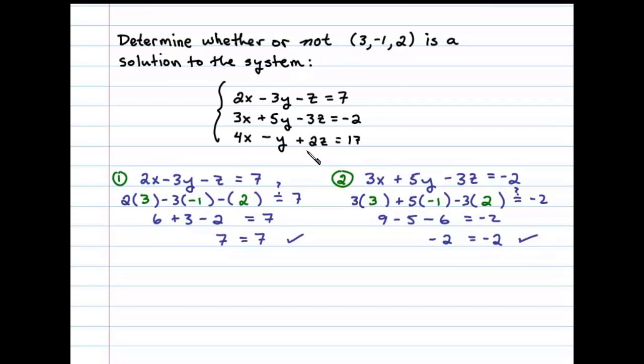Now finally, let's look at the third equation. Substituting 3 in for x, -1 in for y, and 2 in for z, we have 12 + 1 + 4, and we need to see if that equals 17.